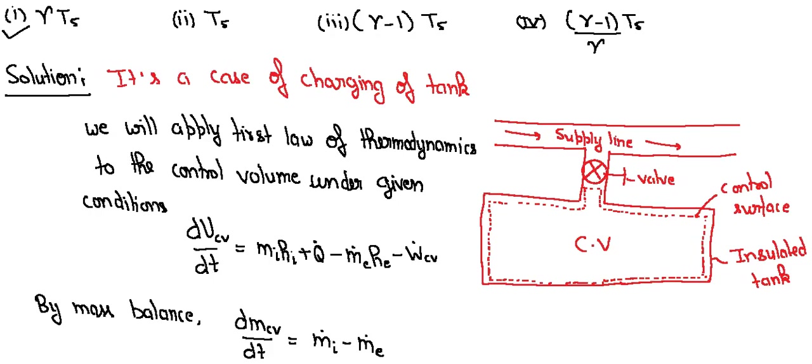Suppose we have this control volume. This is our supply line, this is our control valve, and it is our boundary that is control surface. And the tank is insulated.